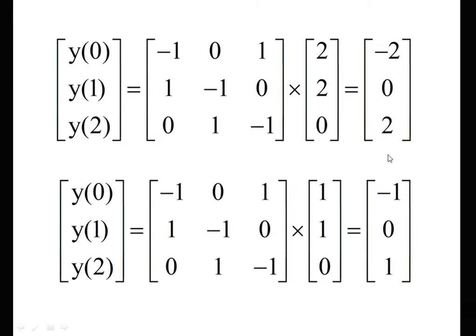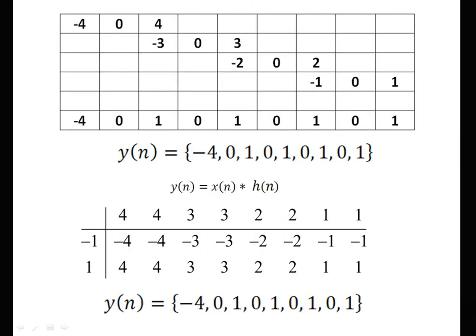We now arrange the outputs of circular convolution in a particular way to get the final linear convolution output. The output of the first is minus 4, 0, 4. We make an overlap of 1 because we appended 1 zero. The outputs are: minus 4, 0, 4; minus 3, 0, 3; minus 2, 0, 2; minus 1, 0, 1. In overlap save we ignore, but here we require to add — hence the name overlap add. Adding the overlapping terms: minus 4, 0, then 4 plus (minus 3) equals 1, 0, then 3 plus (minus 2) equals 1, 0, then 2 plus (minus 1) equals 1, 0, and 1. This is the output of the overlap add method. In an exam, since the sequence is not big enough, you can cross-check the answer using the normal matrix method. The output from the matrix method confirms our overlap add result is the same.